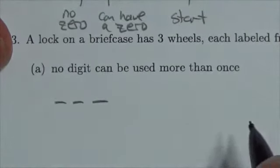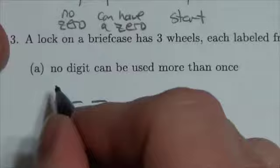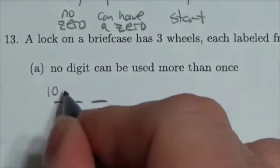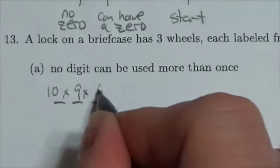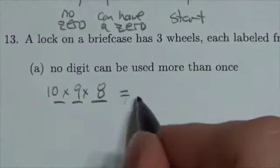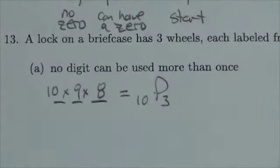Let's think about it as a fundamental counting principle problem with three different tasks. I have to choose a digit for the first position and there are ten to choose from, zero through nine. Once that's chosen, there are nine left over, and once that's chosen, there are only eight left over. This is the same as ten permute three.